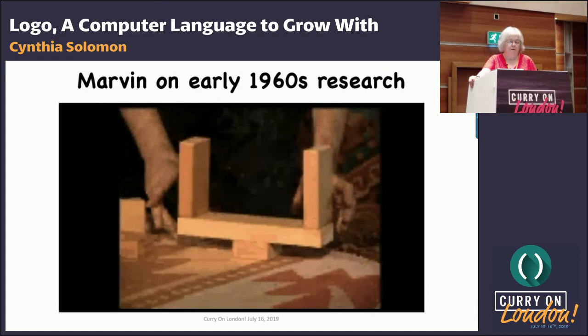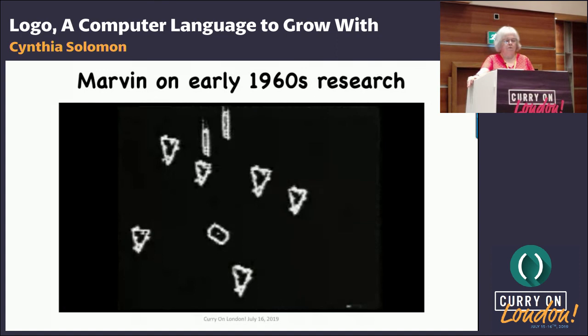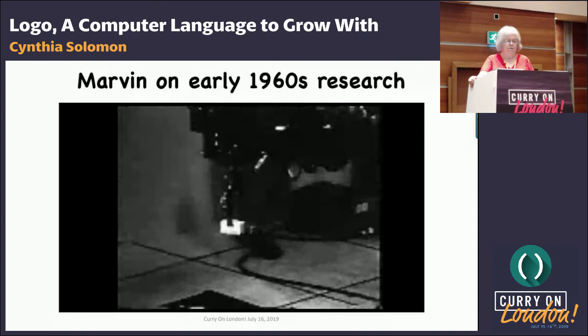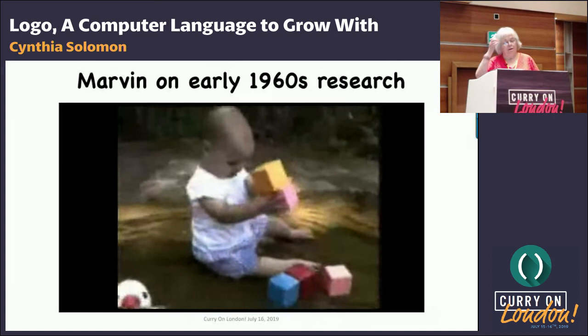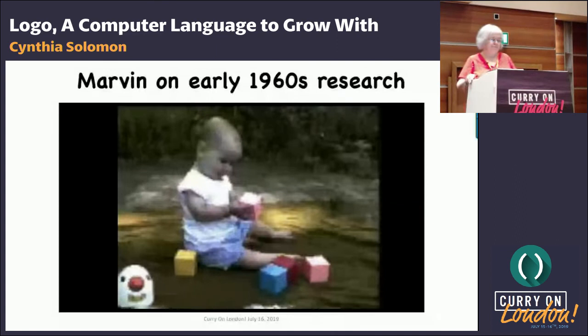We had to make a machine that would find some blocks and build something with them. The programming problem was basically: we had a table with a lot of objects, we built an object, then we confronted the machine with the scene and said 'build another one.' Most of this research was very hard, long projects to do the simplest kind of thing that any intelligent being would know how to do. But then if you watch what an 18-month-old or two-year-old child does...